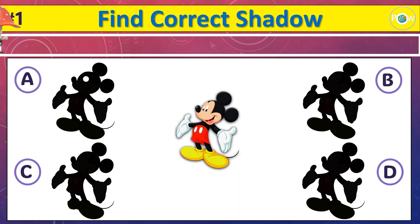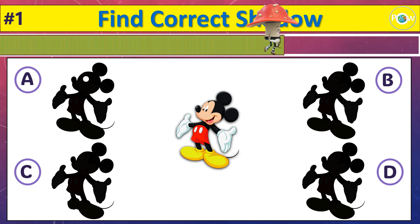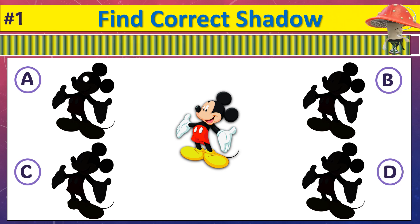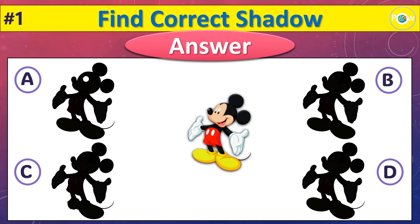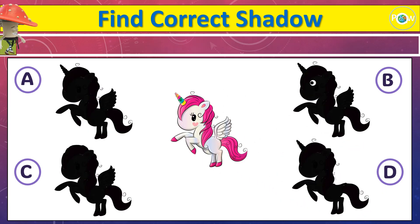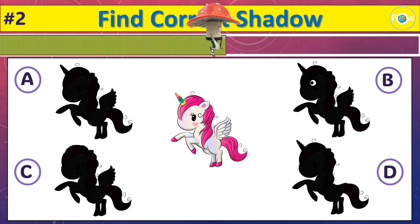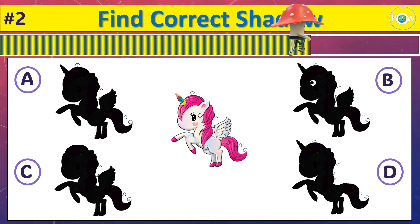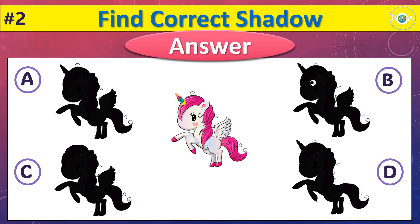Which is the correct shadow of this cartoon? Time up. And the correct shadow is D. Time up. And the correct shadow is A.